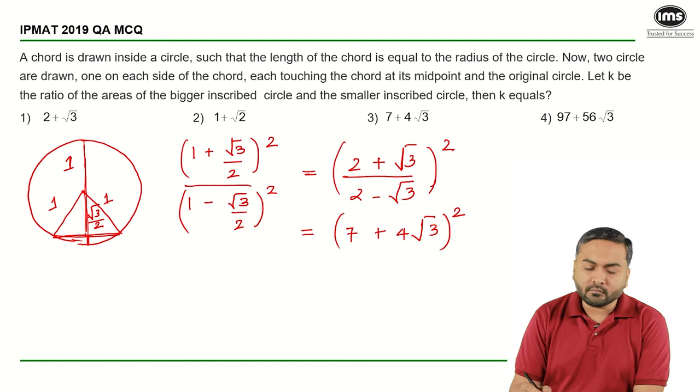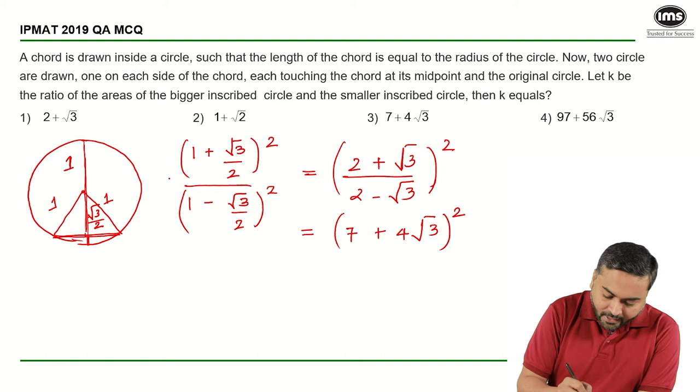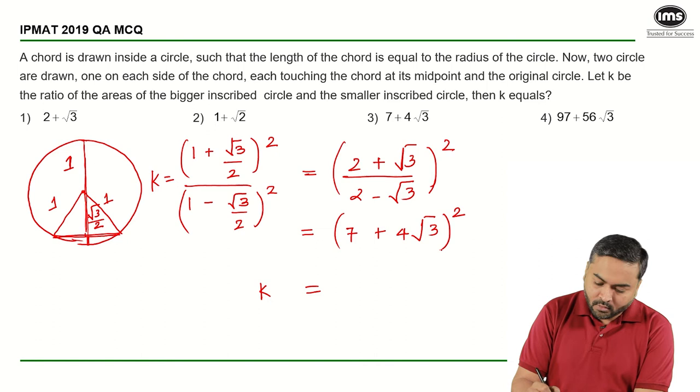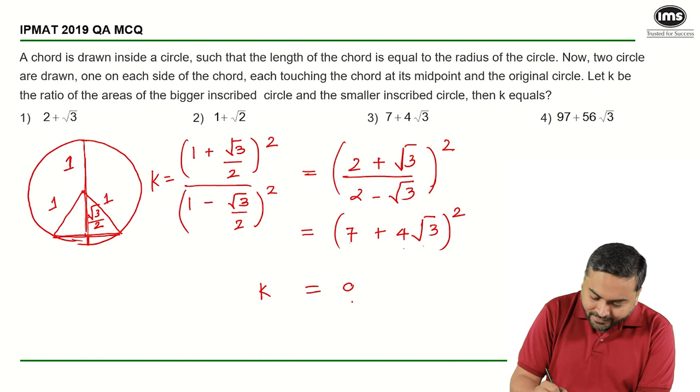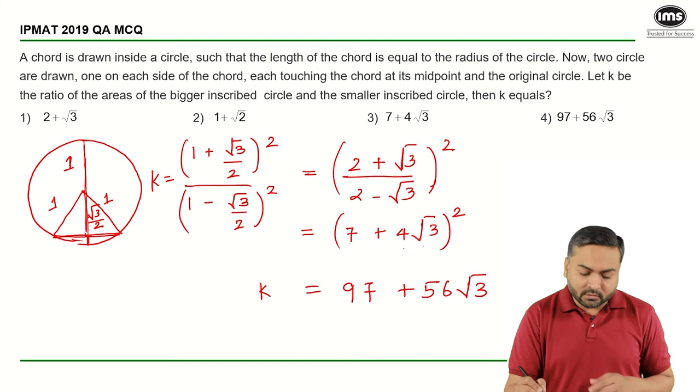Basically this is the value of k that we are looking at. K will be equal to 7 square is 49 and this is 16 times 3, 48 so that is 97 plus 7 times 4, 28, 2 times 56 so this is 97 plus 56 root 3 and that is the given answer.